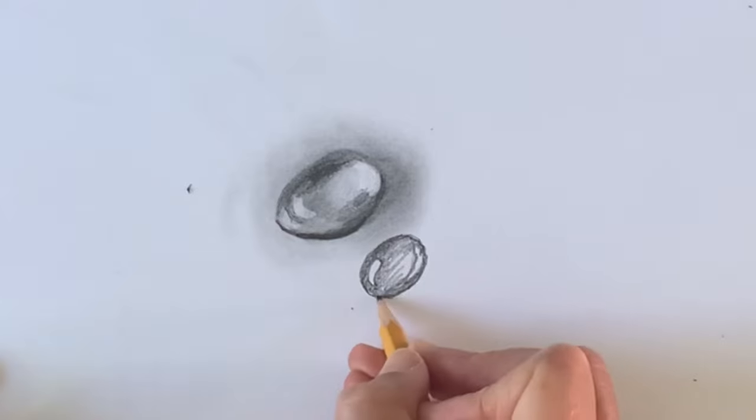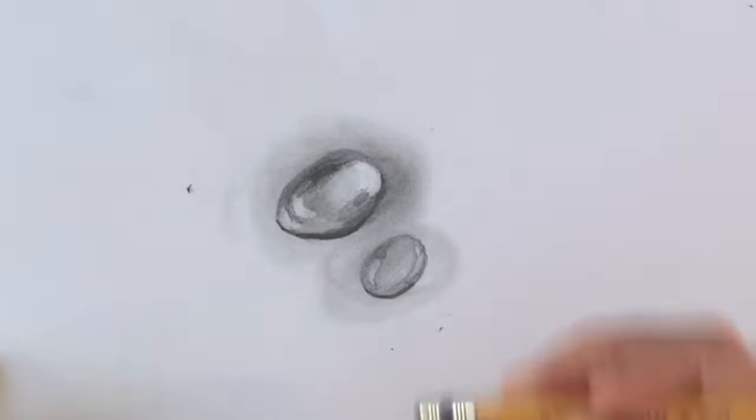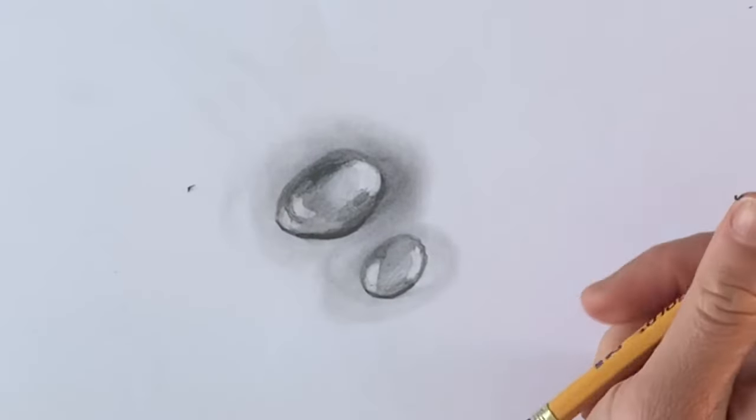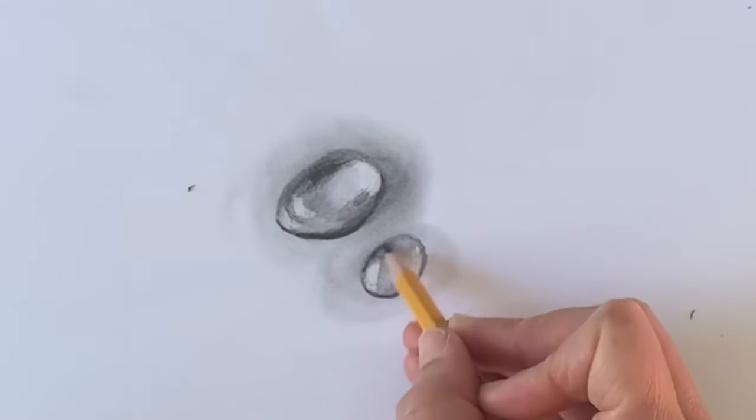Your highlights would be the same, and so would your shadows when you're doing repeated shapes. Notice I use my blending stick to smooth the shading in the inside of the water droplet.